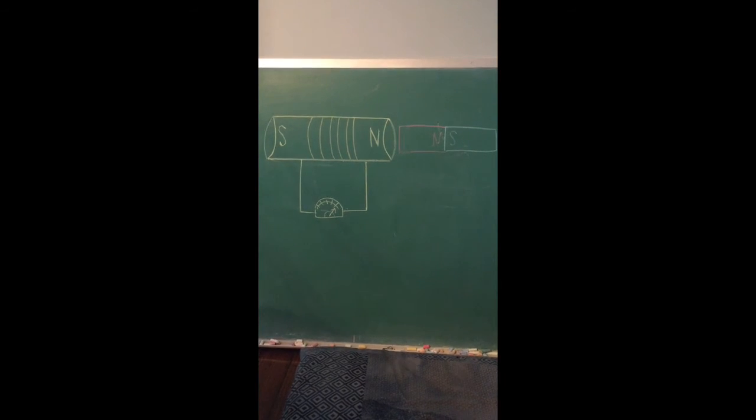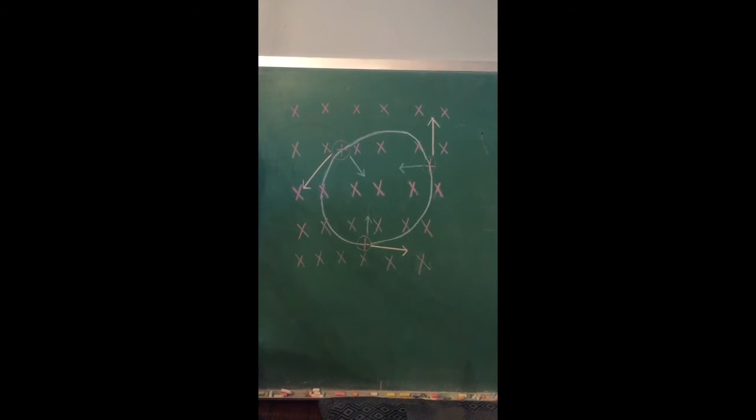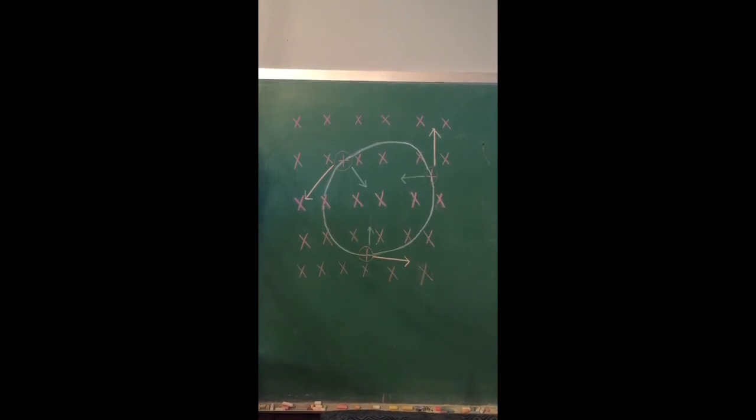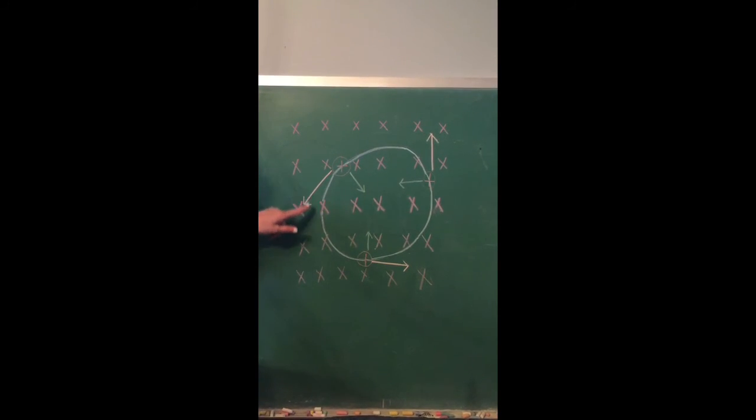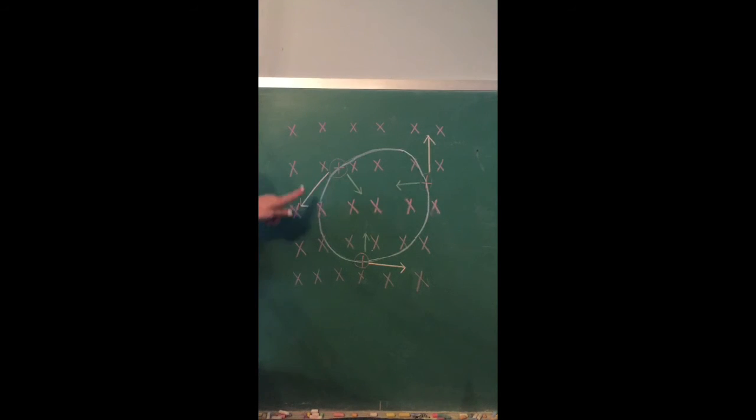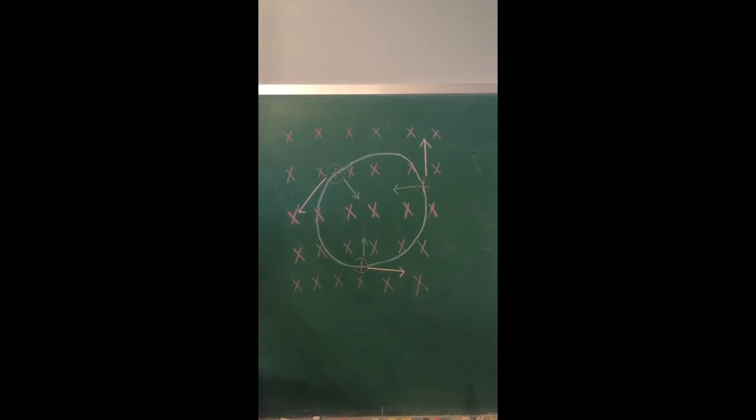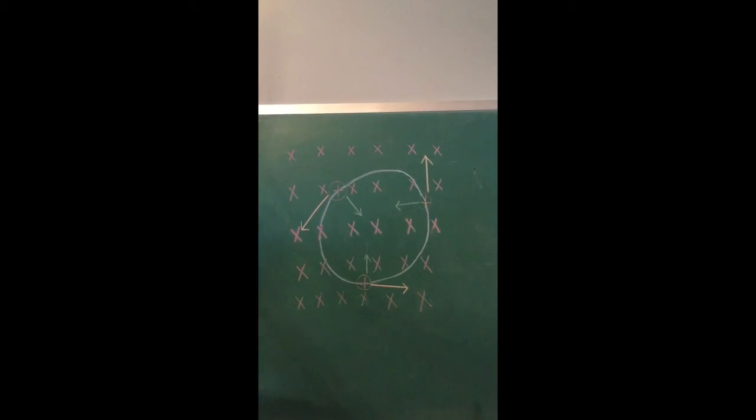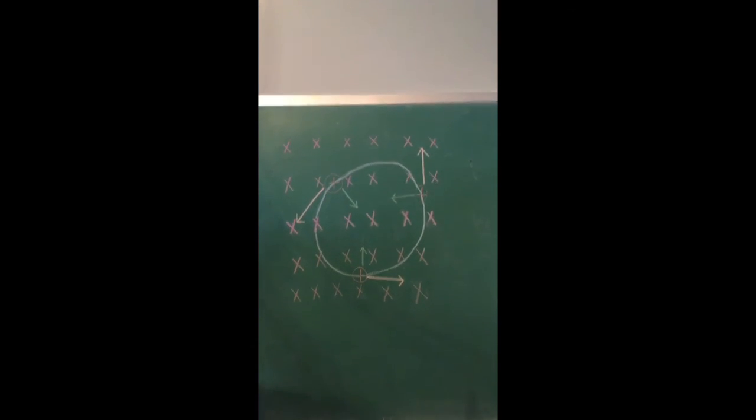If an electron enters a magnetic field perpendicular to the field lines, it will follow a circular path in the plane perpendicular to the magnetic field lines. This is because the magnetic force is always directed towards the center of the circle. Therefore, the path will be perpendicular to the arrows going towards the center of the circle.